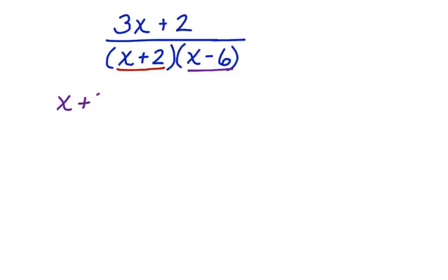x plus 2 equals 0. x minus 6 equals 0. Now, which factors will make this a true statement? What values? That will give us the excluded values.